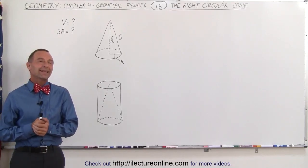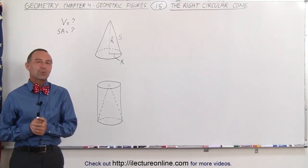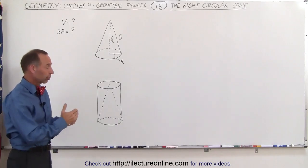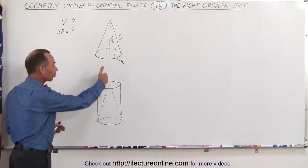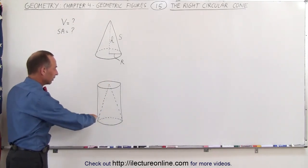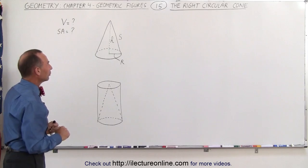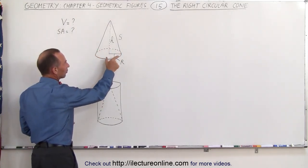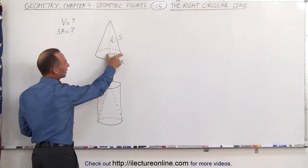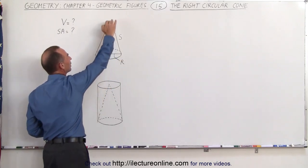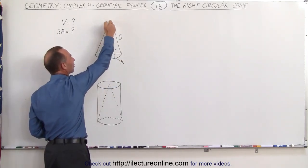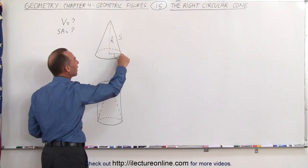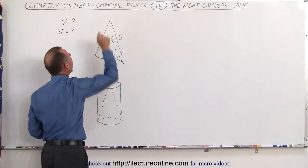Welcome to ElectronLine. Now let's take a look at the right circular cone. They call it the right circular cone because it's directed straight up from the base. Notice that the base is made up of a circle, so the radius of the circle equals R, and the height of the cone equals H, and then we have what we call the slant height — the distance from the edge of the cone at the bottom to the very top.